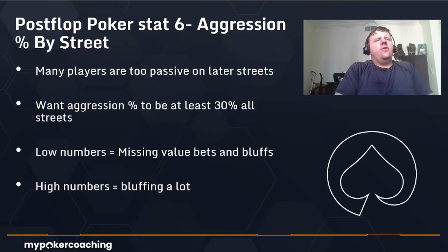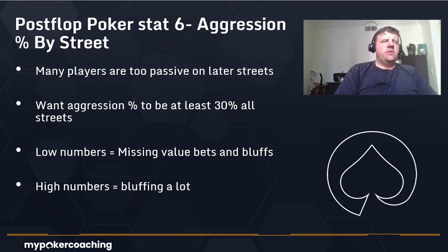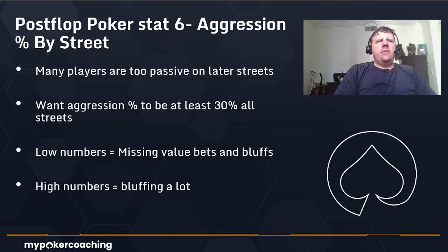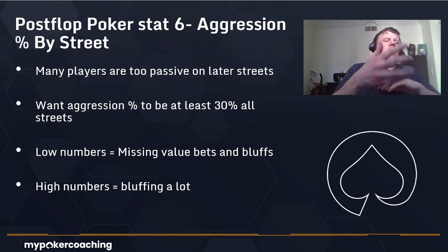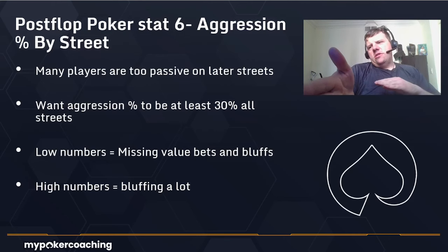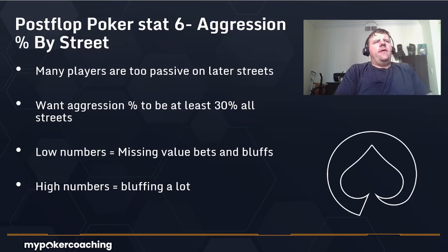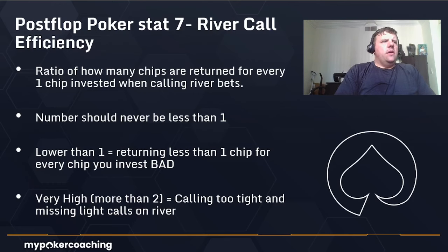Stat number six is Aggression Percentage by Street. Many players are too passive on later streets — turns and rivers. You want your aggression percentage to be at least 30 percent on all streets. A low number probably indicates missing value bets and bluffs, while a high number indicates lots of bluffing, bluff-raising, and thin value bets. We look at it by street because a player's overall aggression number might look fine but they might have 100 percent aggression on the flop and only 15 percent on the river.